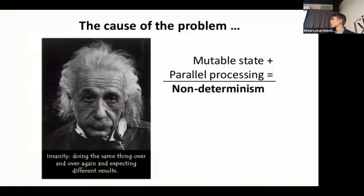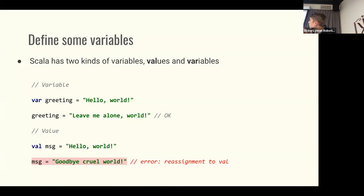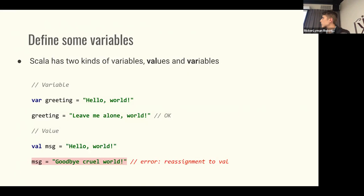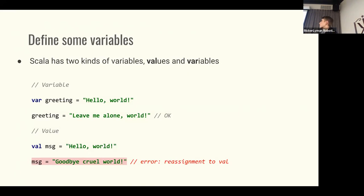Writing programs for concurrent and distributed systems is hard. One of the biggest problems is mutable state. In Scala there are two kinds of things — I would not call them both variables — there are values and variables. A variable is mutable and a value is immutable, meaning it cannot be reassigned later. Once you declare it, it cannot be reassigned. From a mathematical standpoint this makes a lot of sense, because in mathematics there are no reassignments or mutations — we just declare functions and operate with expressions.